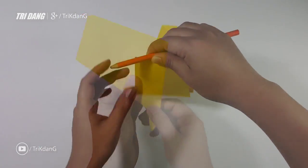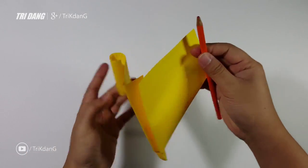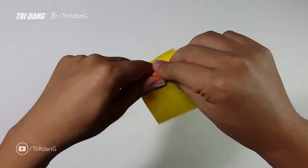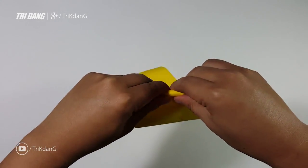So after I finish both sides of the wings, I will use a pencil to curve the wings. One side first, and then the other side. I will curve it.